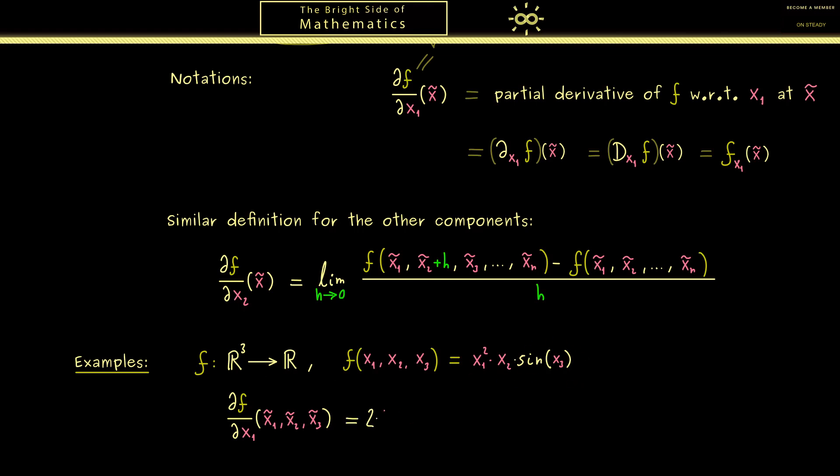Hence our partial derivative here is 2x₁ times the constant. And then we put in the point x̃, so all the components get tildes now. So you see this is not so complicated. And for this reason often you see that one chooses x₁, x₂, x₃ for the point one puts in, so without the tilde. However, in order to sensitize you, I go with the tildes now.